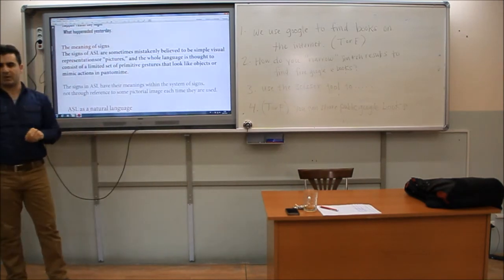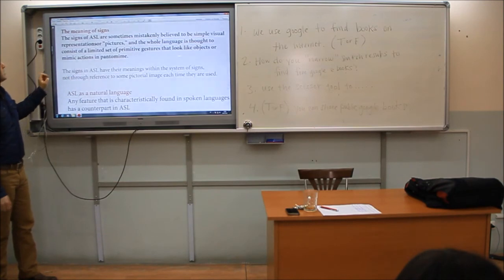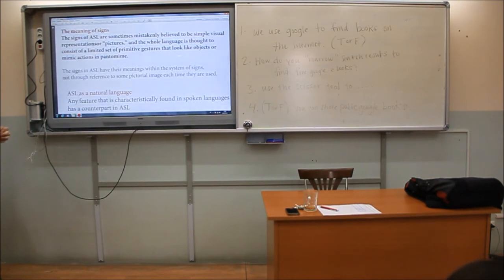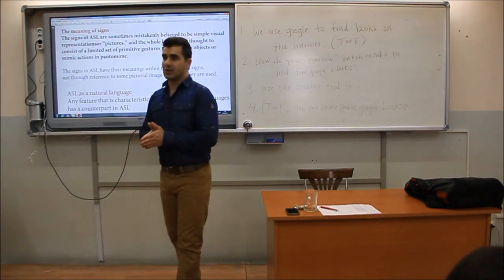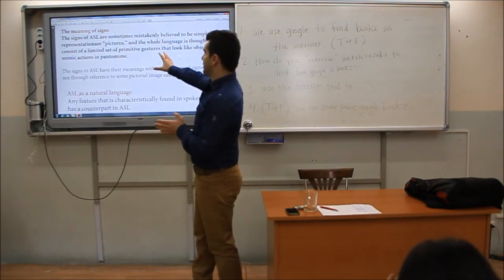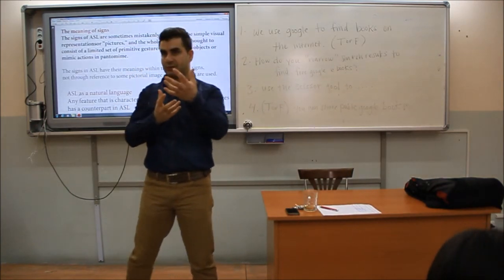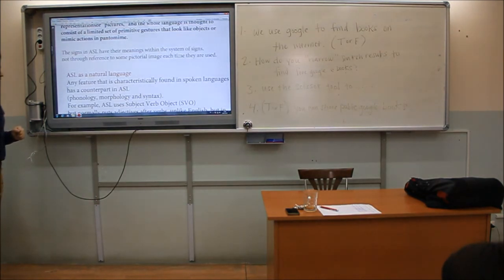I'd like to direct your attention to a few points here — the meaning of signs. The signs of ASL are sometimes mistakenly believed to be simple visual representations of pictures, and the whole language is thought to consist of primitive gestures that look like objects or mimic actions in pantomime. We talked about this at the very beginning — you cannot think that they are just pictures or simply visual representations of some words.